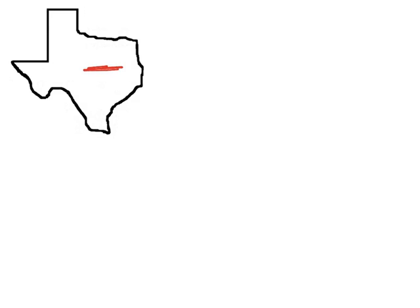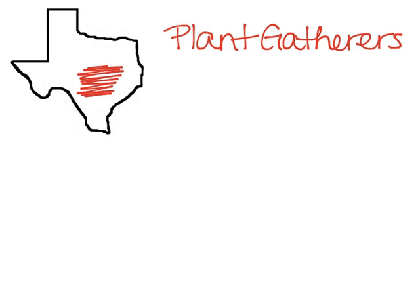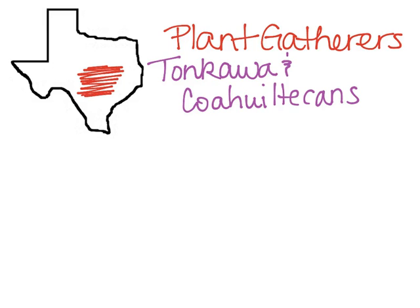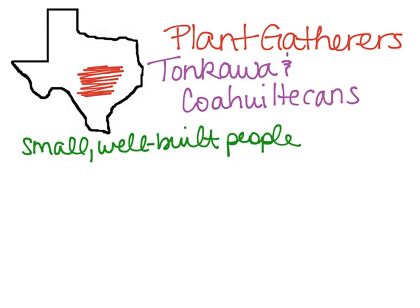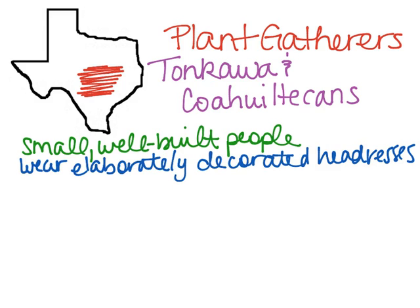The next group are the plant gatherers, who live in the intersection of Texas. These are the Tonkawas and the Coahuilticans. Both of these tribes are small, well-built people who participate in elaborate ceremonies and decorate headdresses with shells, feathers, and beads that they make.